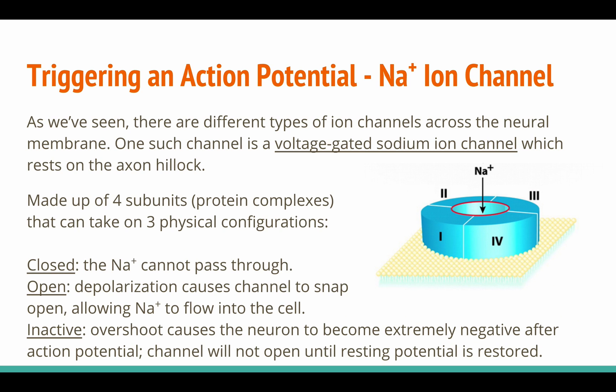There are different types of ion channels across the neural membrane. One such channel is a voltage-gated sodium ion channel, which rests on the axon hillock. Made up of four subunits, or protein complexes, these channels can take on three different physical configurations: closed, open, and inactive.